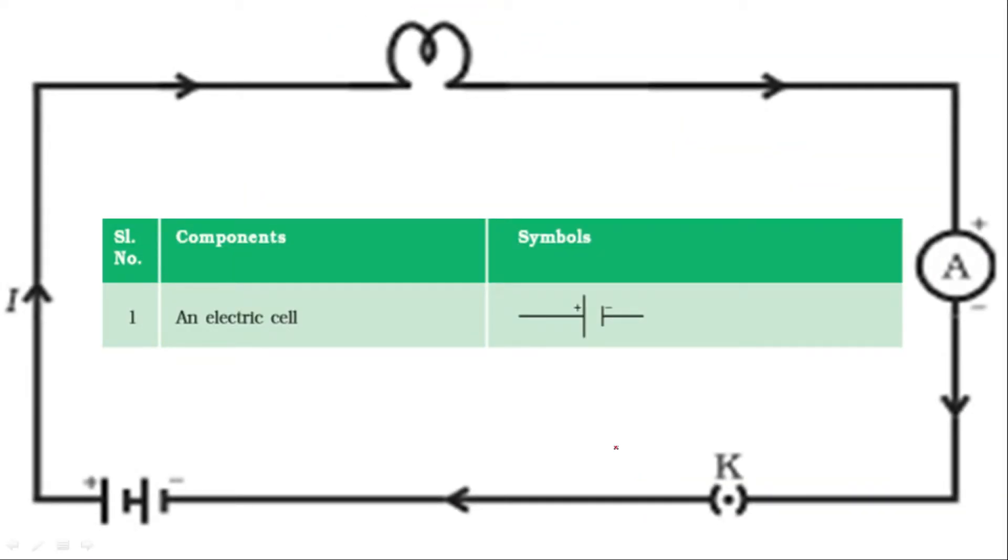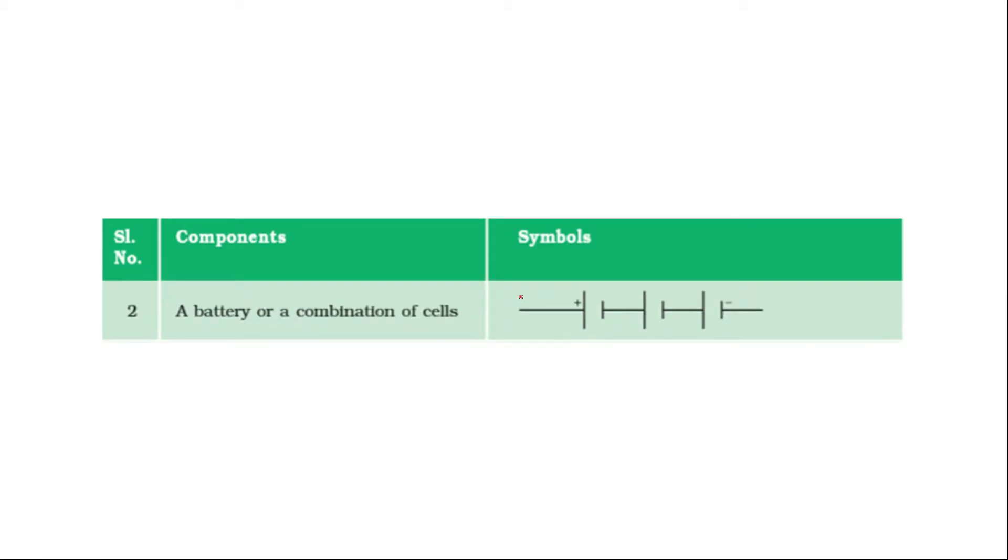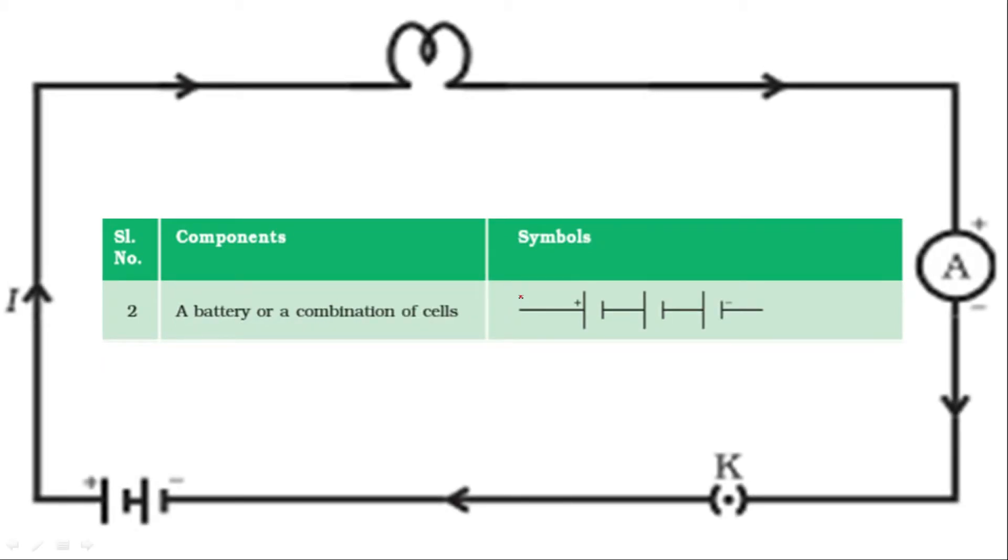So let's see one by one. First, an electrical cell. Here we can denote our electrical cell like this. Or if I talk about battery, then battery is a combination of more than one cell, so we can symbolize it like this, or we can also symbolize it like this. This is also a symbol for battery. You can use any of the symbols to symbolize the battery.